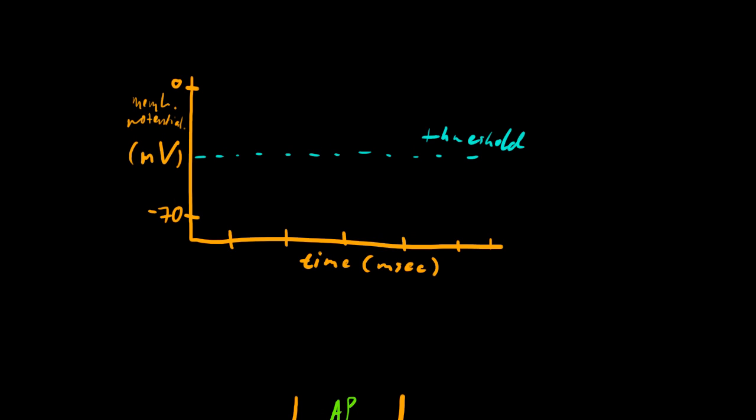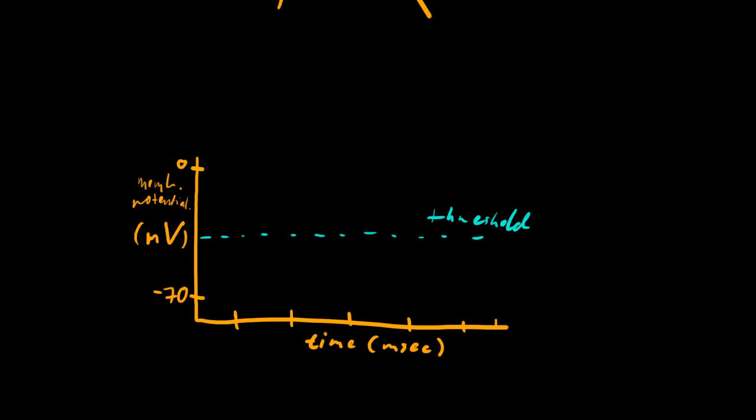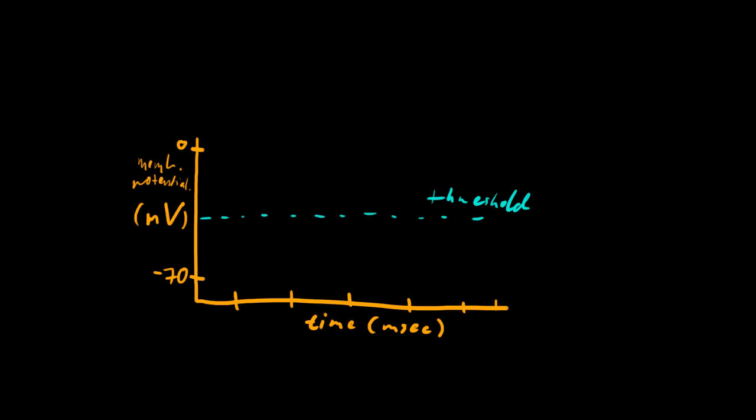So here we'll graph the EPSP. Basically, it's just a small increase here, generally. And so that's where the neurotransmitter bound, and it lets some ions in, and you create that EPSP.